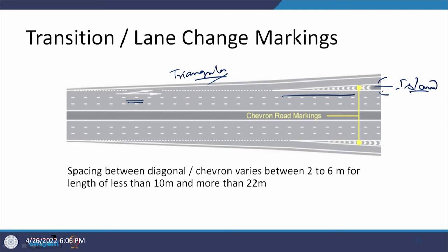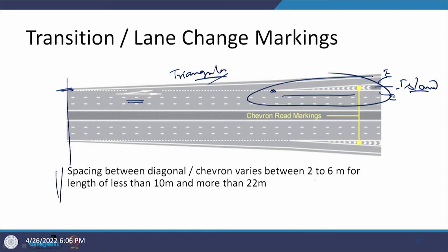The two edge lines come together and the chevrons extend to the start of the transition section. Regarding spacing between diagonal markings or chevrons, the spacing varies from 2 to 6 meters — where 2 meters is for a length of less than 10 meters and 6 meters is for a length of more than 22 meters. For lengths in between, an interpolated value is used.